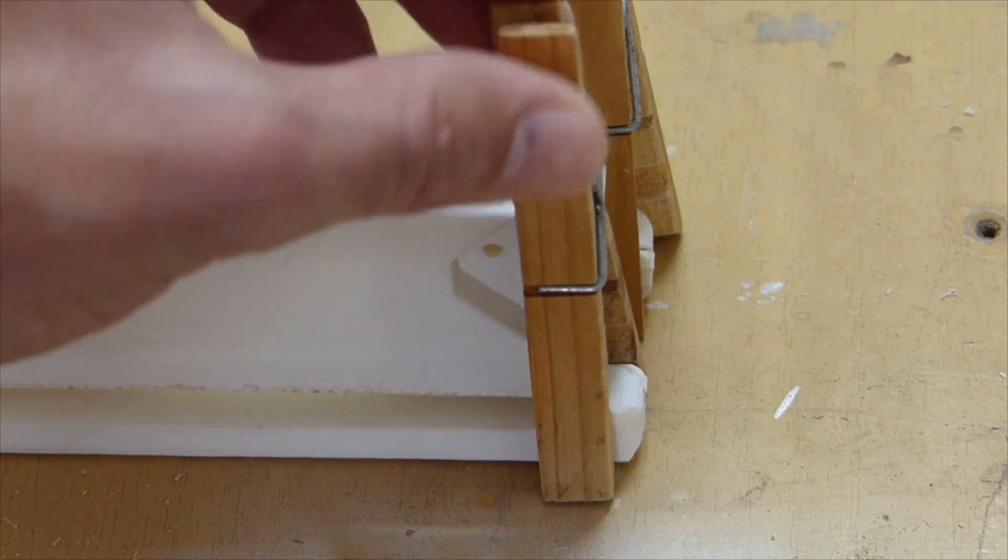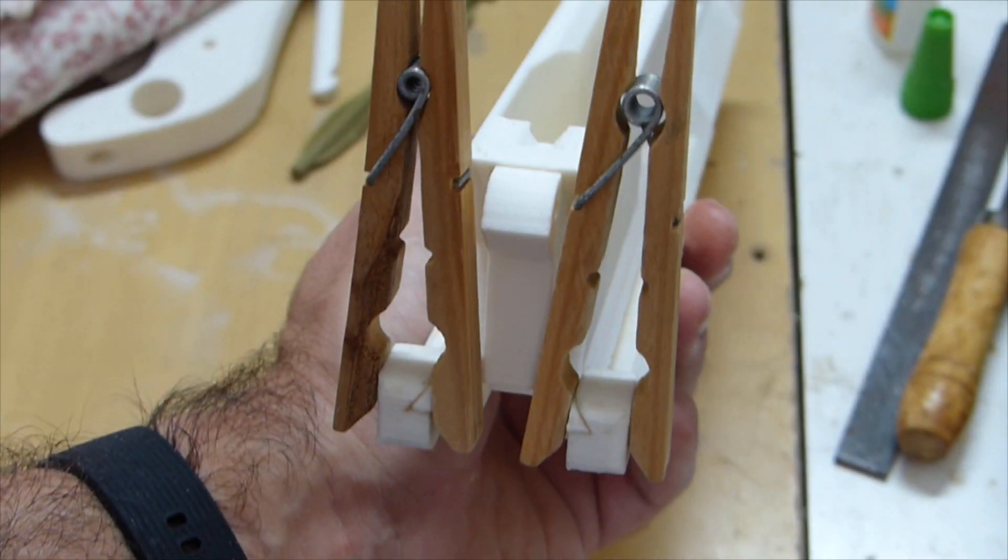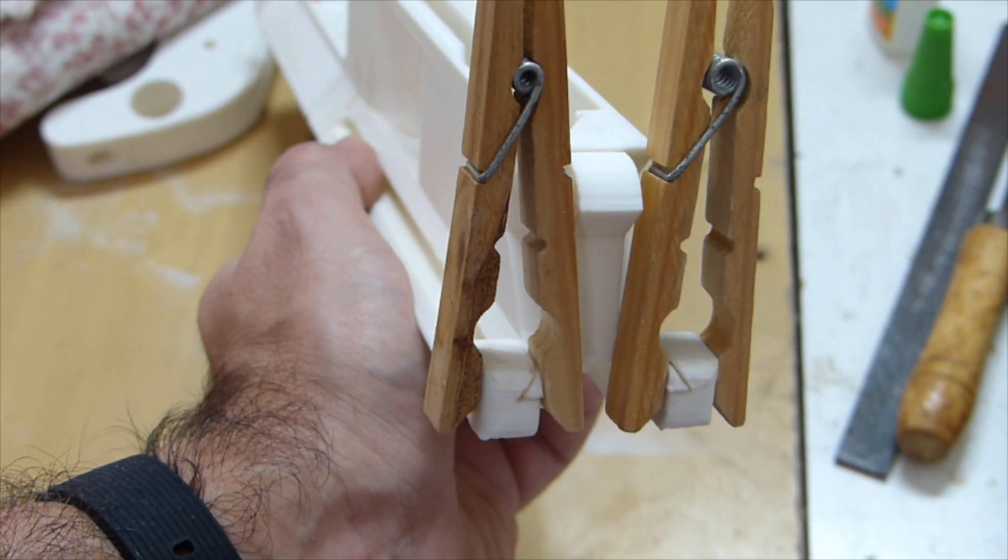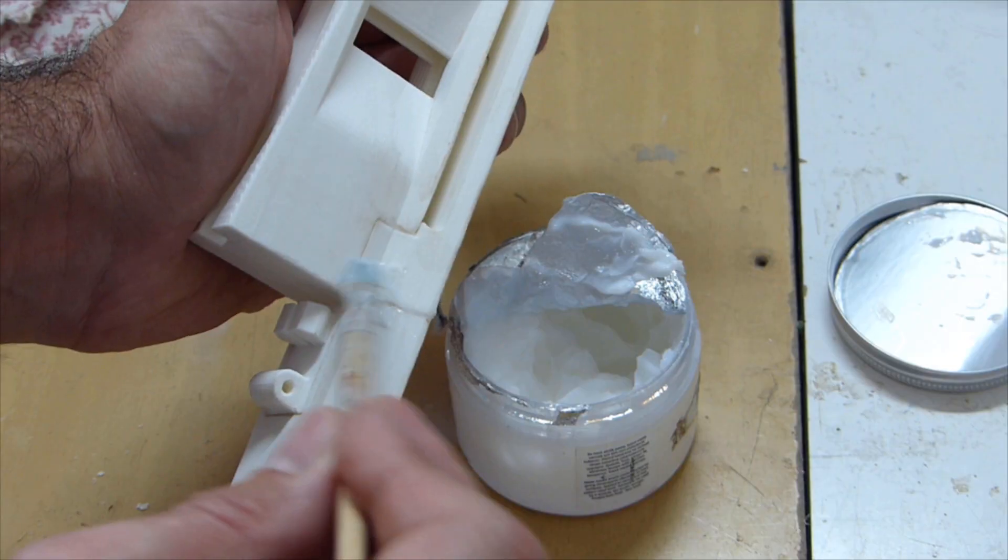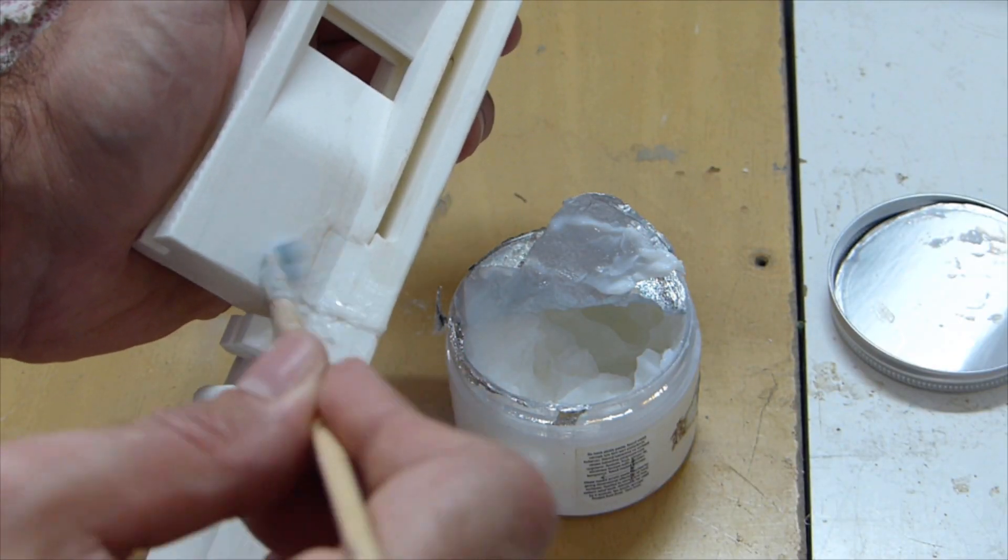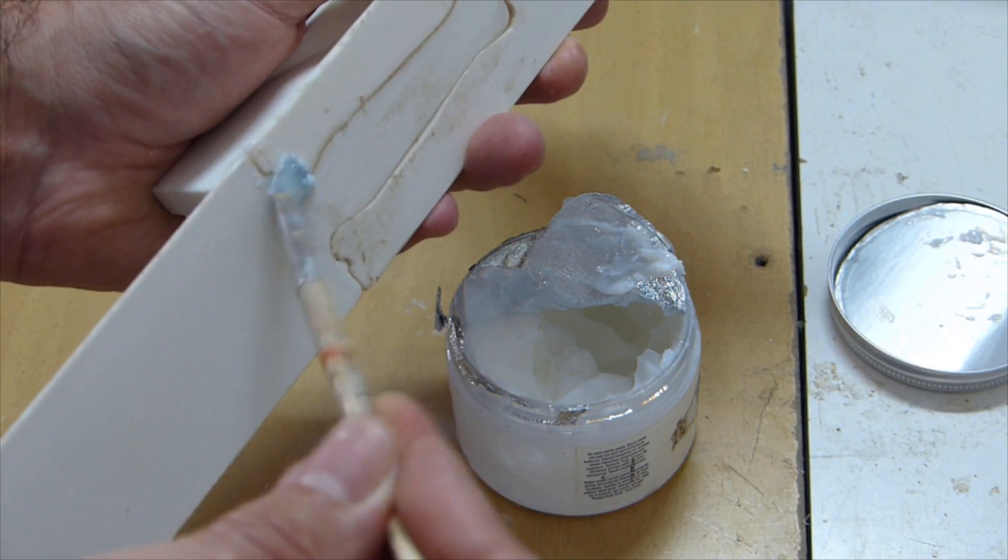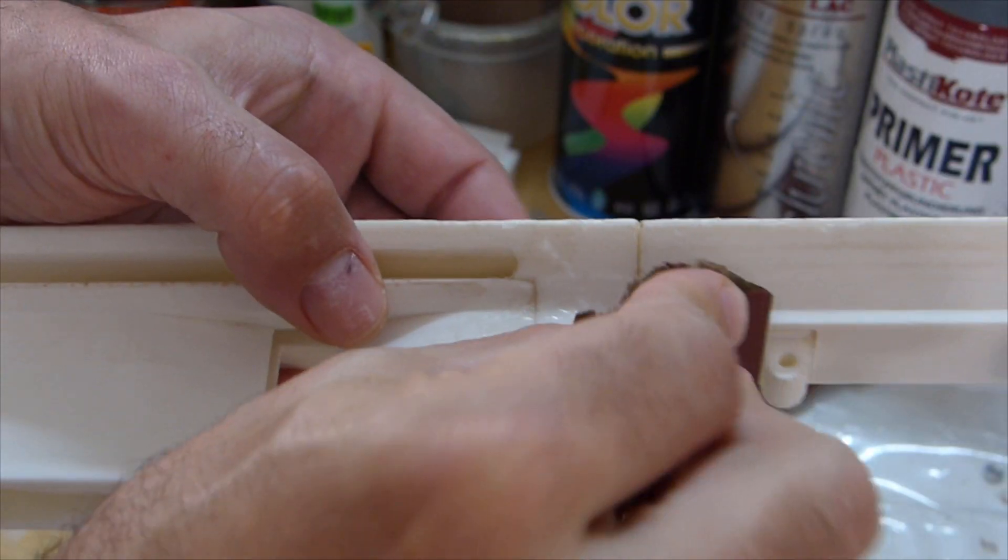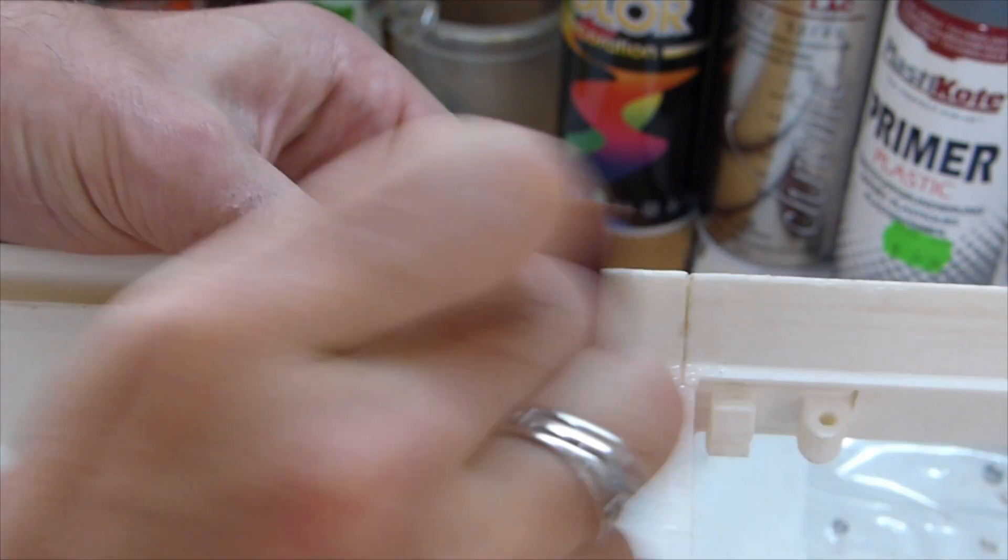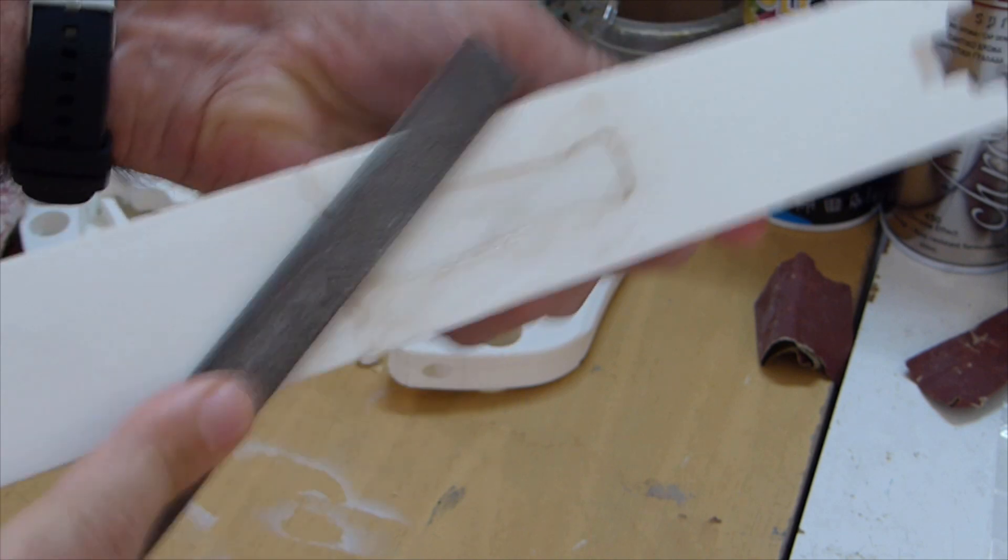That concludes the assembly of the main body part. However, I also decided to fill in the small gaps where the pieces joined with some filler hardener since I will be spraying these parts later. Once that was dry, I sanded and filed it smooth from the bottom and the sides.